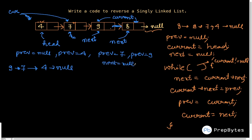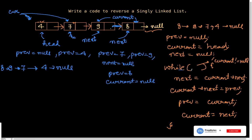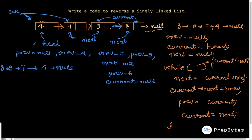Next becomes null, and we do current's next equal to prev, so 8's next equals 9. We update prev to current, so prev becomes 8, and current becomes null. We come back to the loop condition — current is null, so we exit the loop. But head is still pointing to 4. Since we kept 8 in prev, we add one line outside the loop: head equals prev. Now head points to the first node of the reversed list.